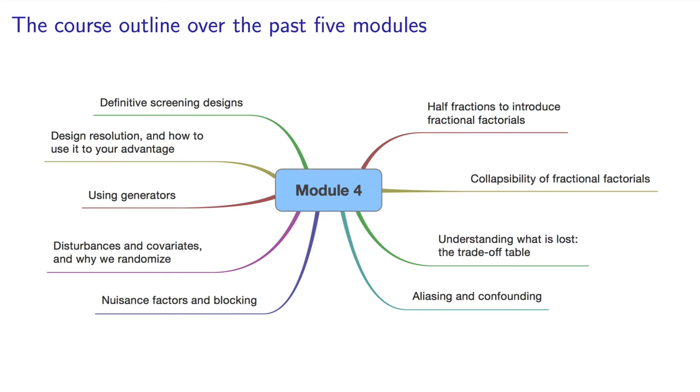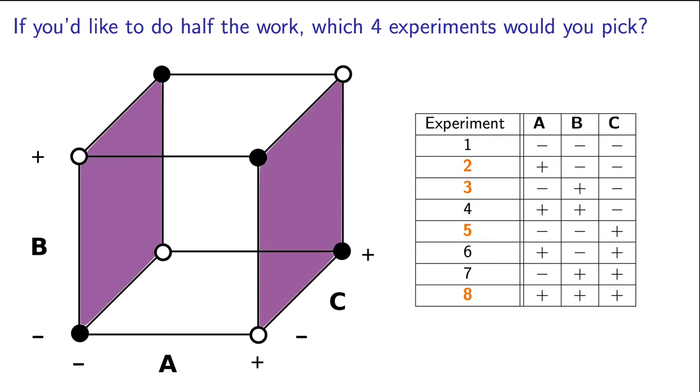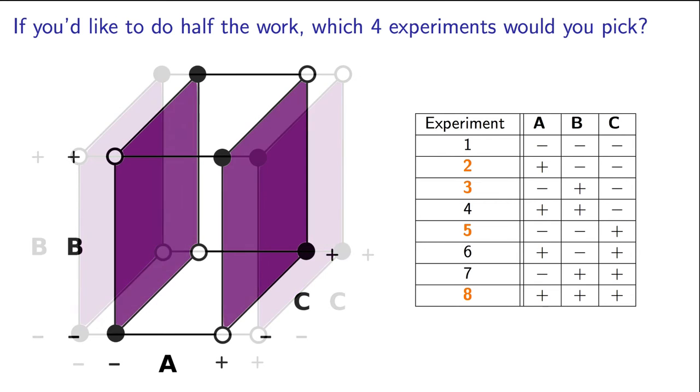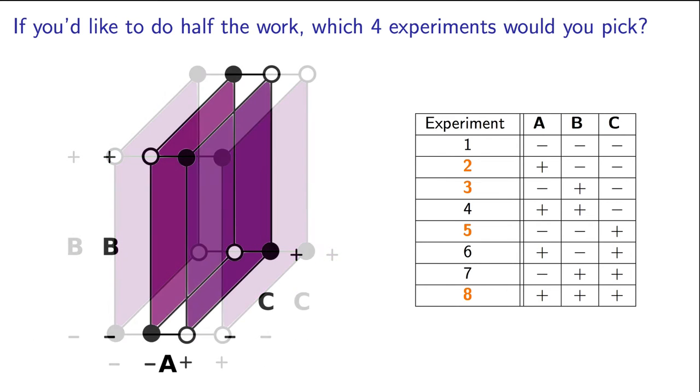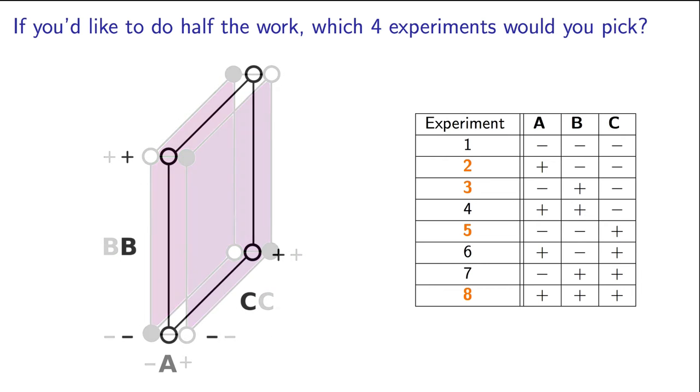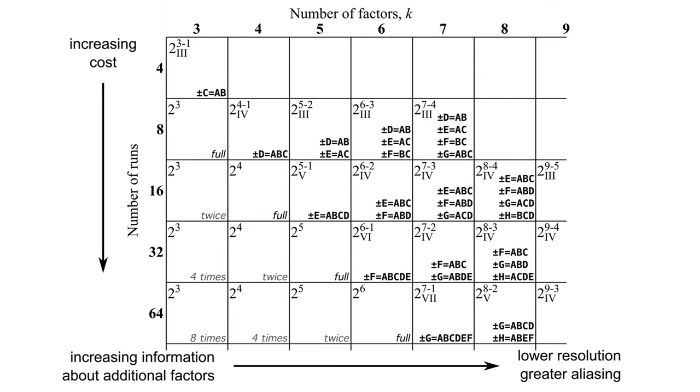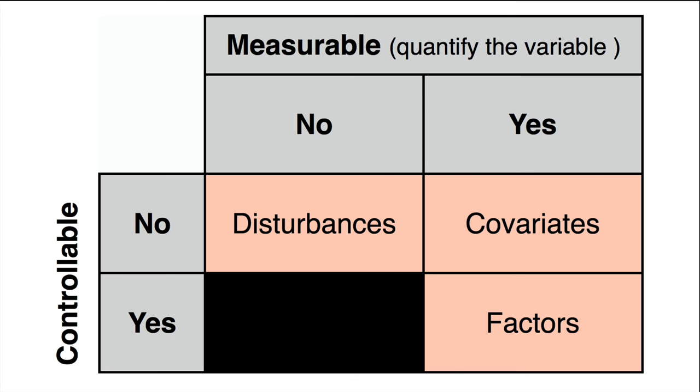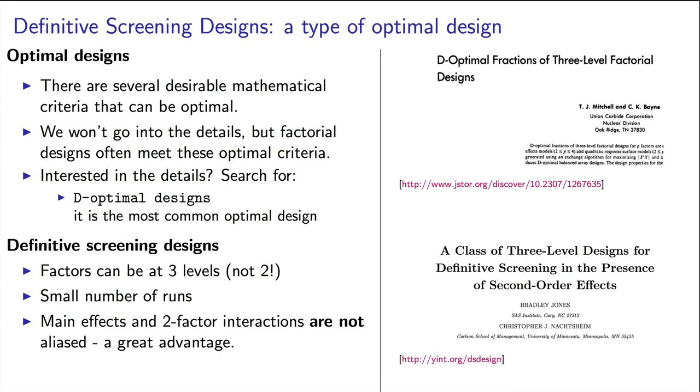In the fourth module of the course, we started to look at fractional factorials. We use these when we have a large number of factors and when we want to practically reduce the number of experiments to some lower value. We know that there is no free lunch and that aliasing will occur. But we have this trade-off table to help guide us in that choice. We learnt about blocking for nuisance factors, and we also covered the idea of covariates in that fourth module. I had also mentioned the concept of definitive screening designs, which are emerging as a more effective design than fractional factorials.